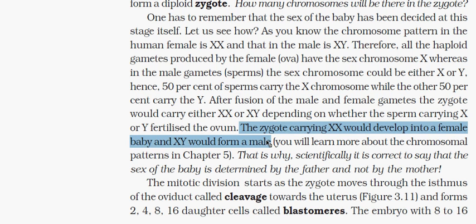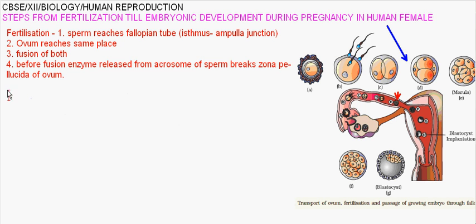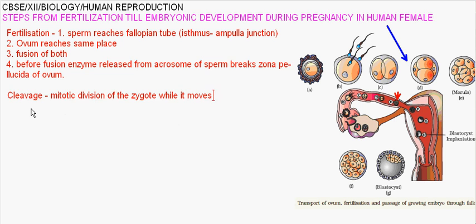Cleavage is the mitotic division of the zygote while it moves toward the uterus. Once mitotic division starts, it forms up to 8 to 16 cells. These cells are called blastomeres.